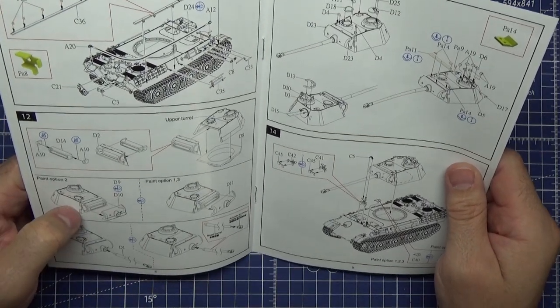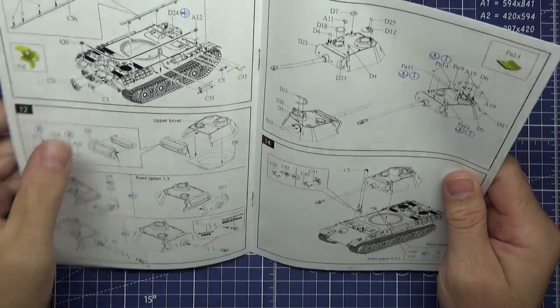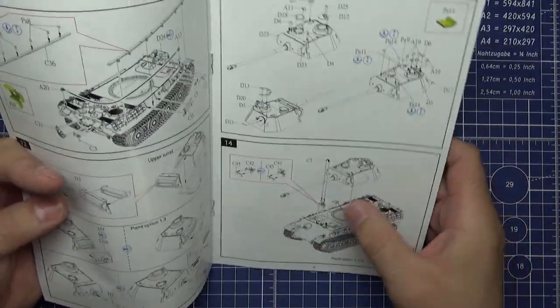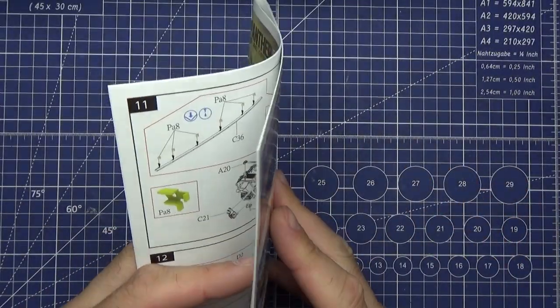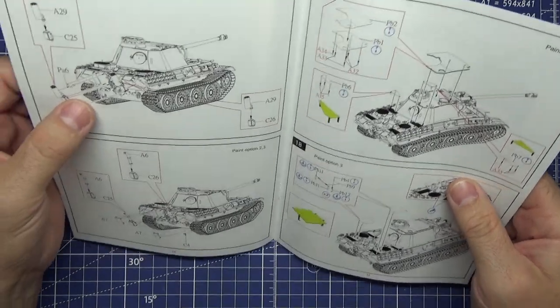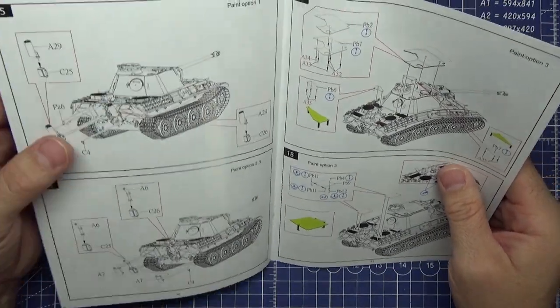You've got the turret build with more small parts going on, and the exhaust system at the rear.